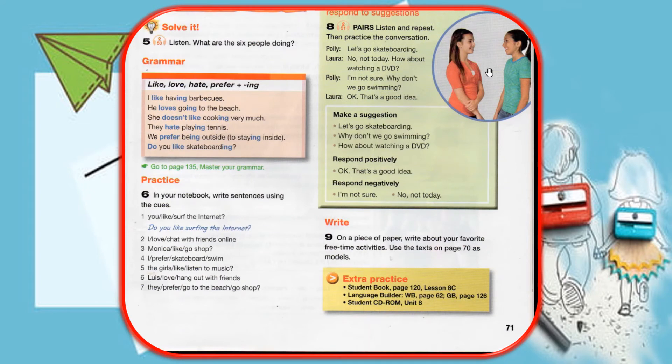Let's practice the grammar: like, love, hate, prefer plus -ing. Here you have some examples. I like having barbecues. So here you have the subject, the verb like, and the other verb with -ing: have plus -ing equals having barbecues.